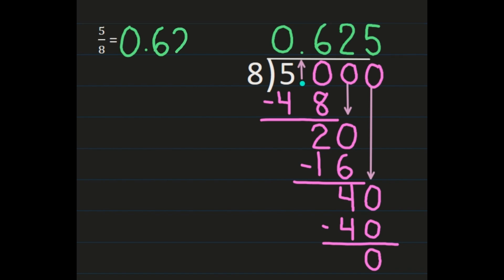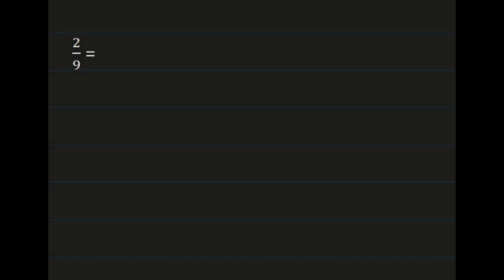So 5 eighths as a decimal is 0.625, or 625 thousandths. For our second example, we have 2 ninths, and we're going to convert this fraction to a decimal following the same steps.